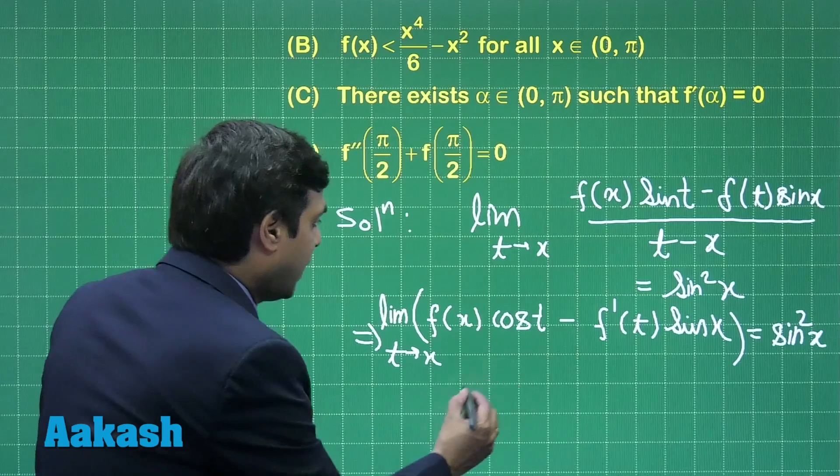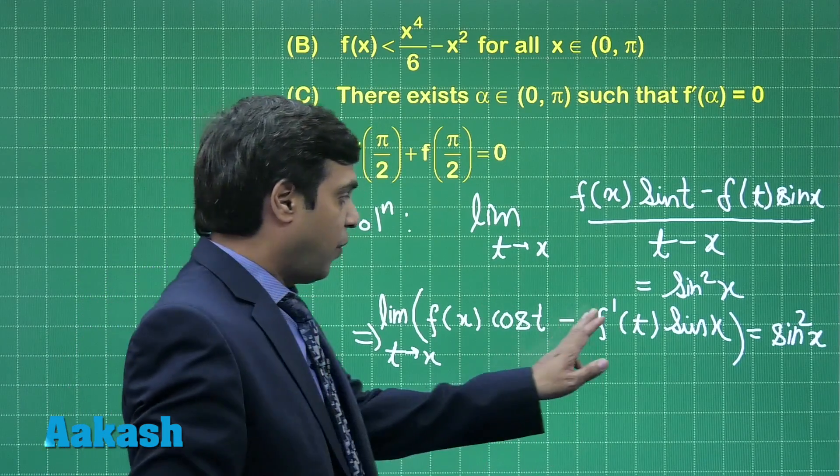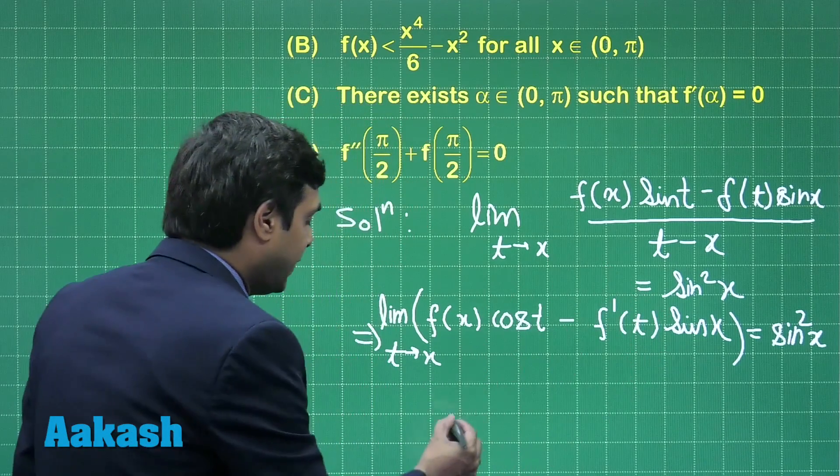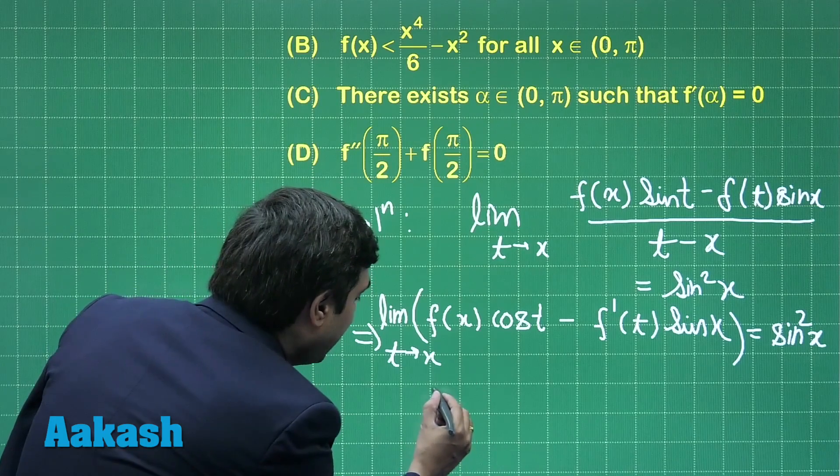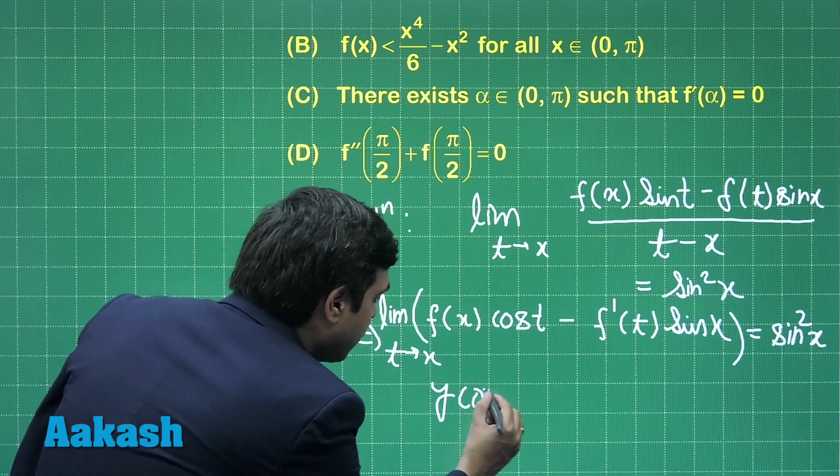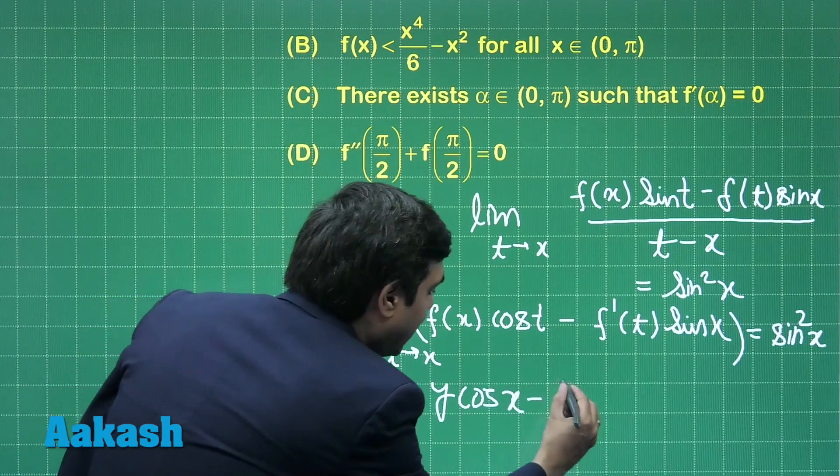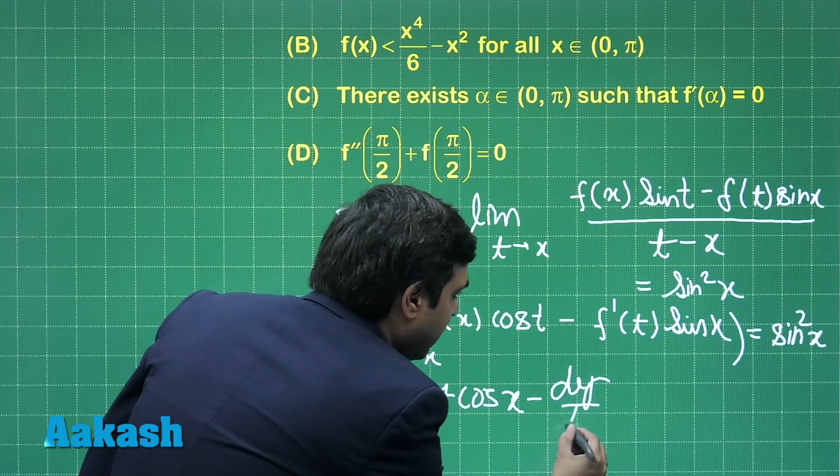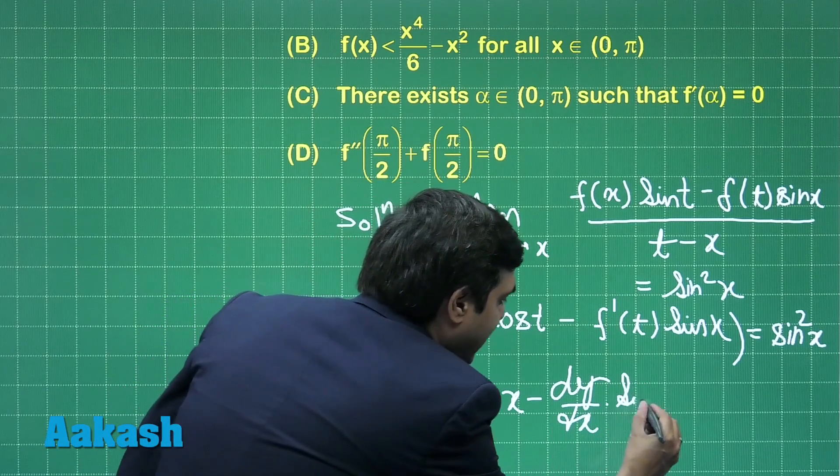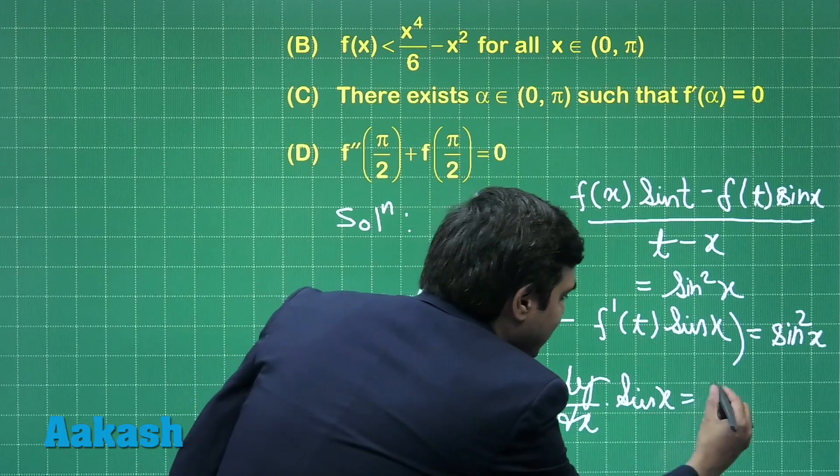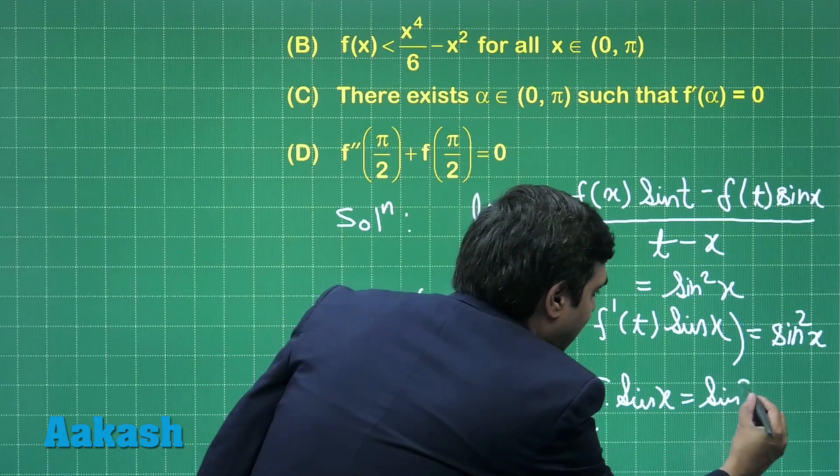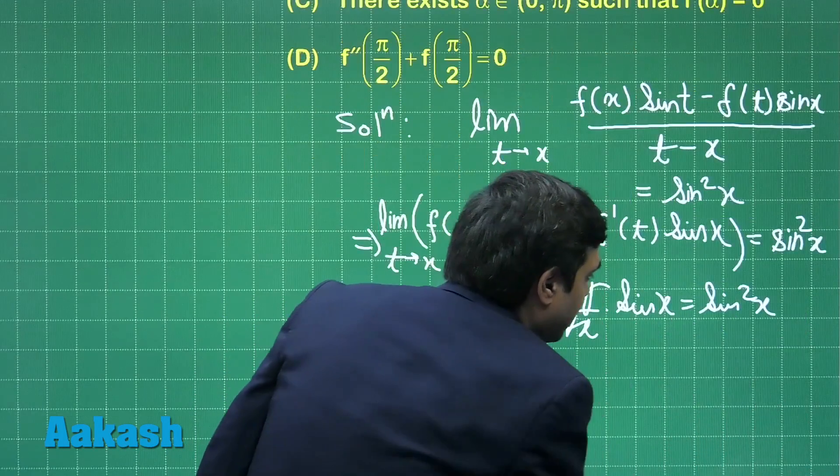Applying the limit, we can write f'(x) as dy/dx just to get it simplified. So we have y cos x - (dy/dx) sin x = sin²x, right.